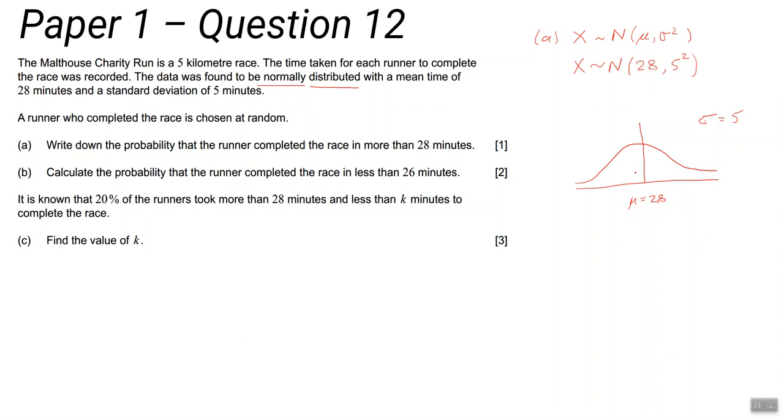Write down the probability that the runner completed the race in more than 28 minutes. 28 is the mean - this is the mean. It's important because it says 'write down,' so you can use the symmetry of this graph. My graph isn't particularly symmetrical, it's not been very well drawn. You can use the symmetry of your graph to say what's the probability that the time is in that area of the graph. And it's a 'write down' question, so it means no calculating is needed.